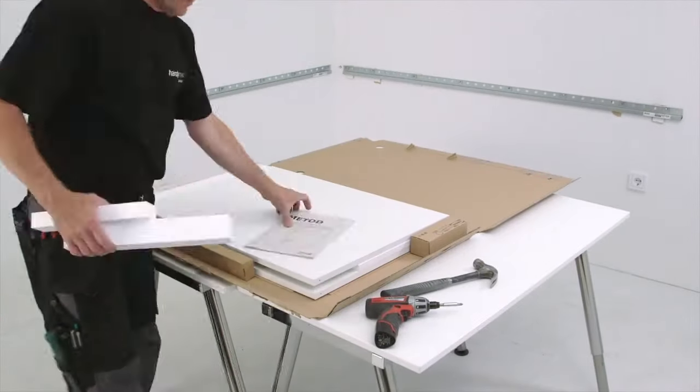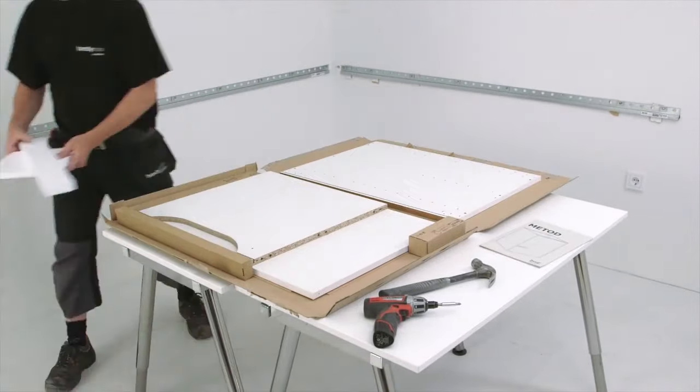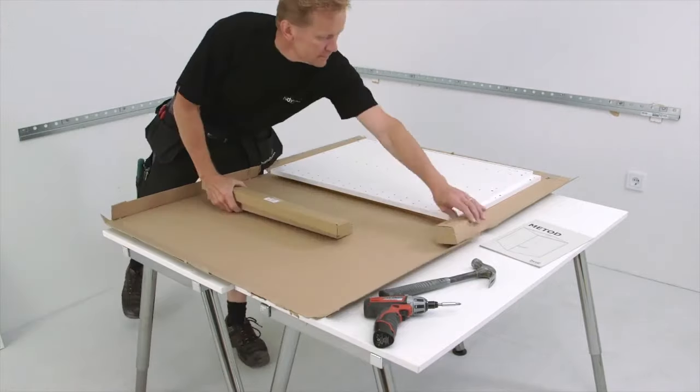Our cabinets come in two colors, white and black-brown. They are made of an 18mm thick particle board and melamine.